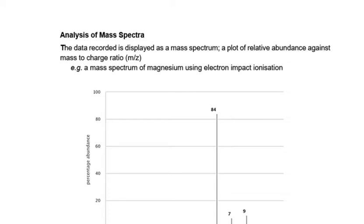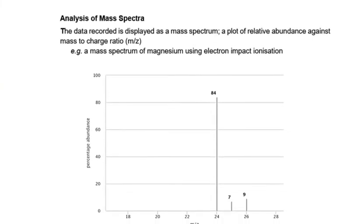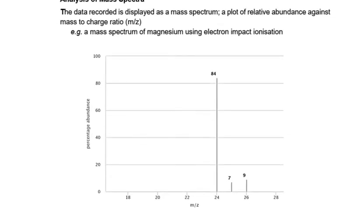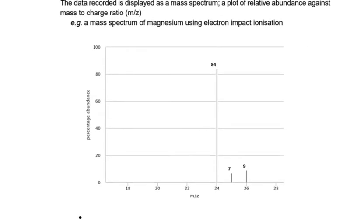In our previous videos we've looked at how a mass spectrometer worked and some calculations we might be expected to do alongside our understanding of mass spectrometer. What we're going to look at now is what the result of a mass spectrometer sample being analyzed is and how we can interpret it.